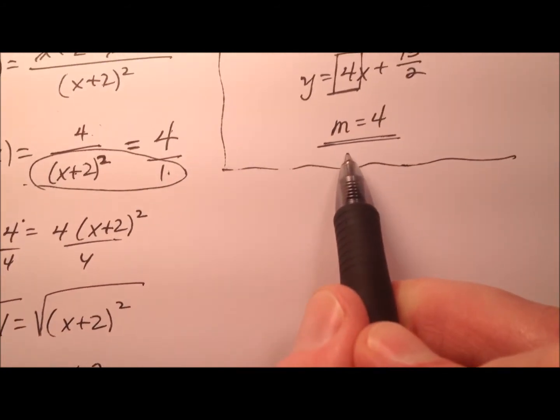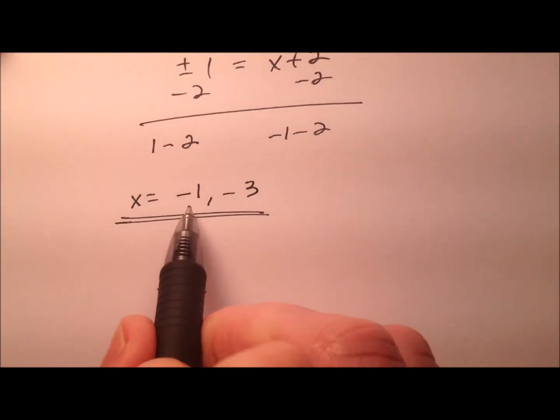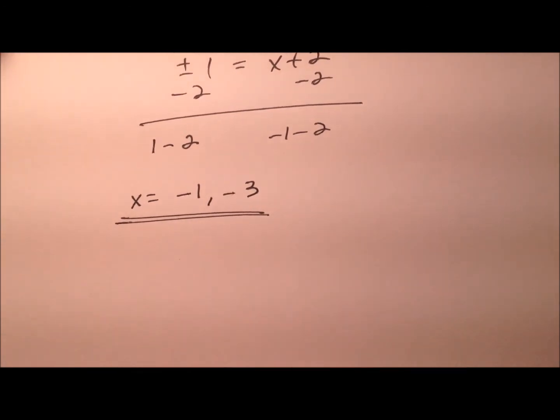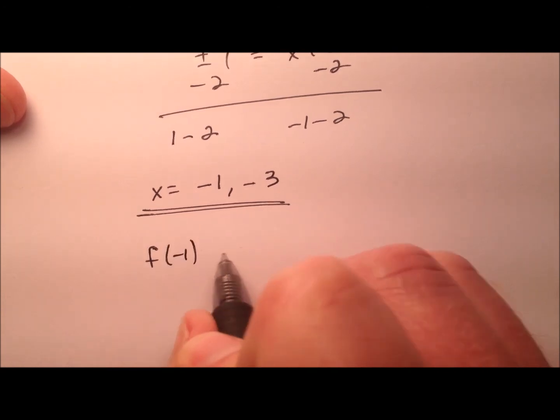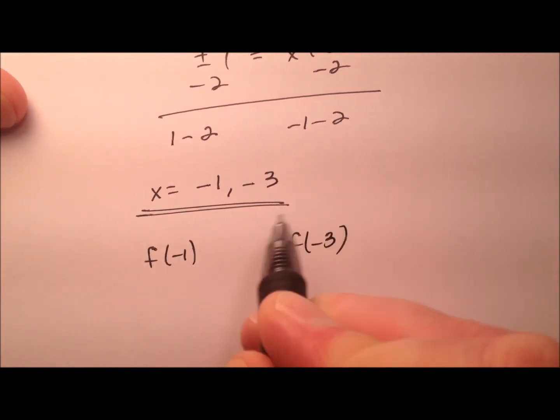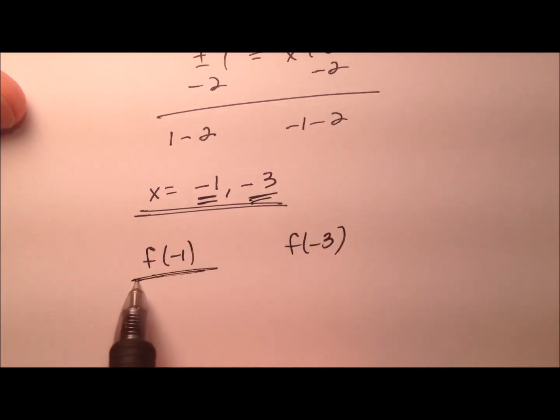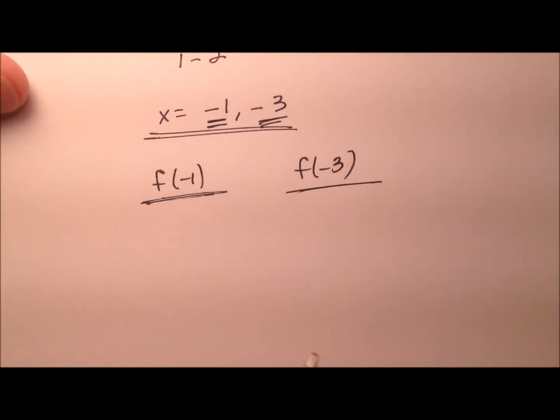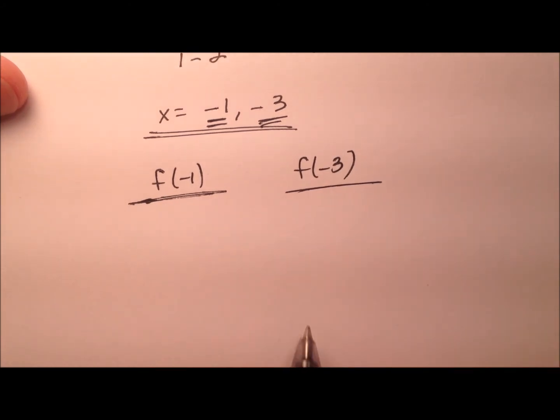Well, we have our slope from before. The slope was 4. And our points are going to be, well, we have the x coordinate for each of our points, but we don't yet have the y coordinate. So let's go ahead and find that. So I'm going to find f of negative 1 and f of negative 3. So it's these two x values that I just found. And the reason I'm going to do that is to find the associated y coordinate that goes with this ordered pair.